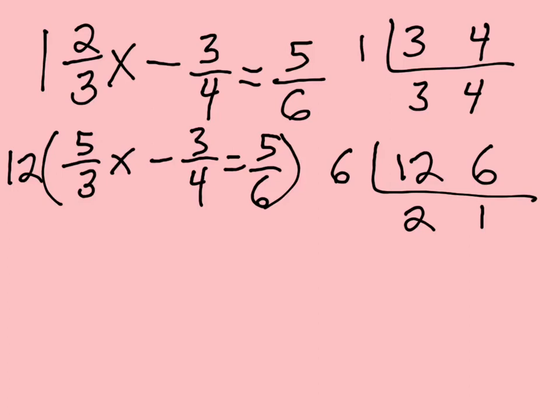And so then 12 divided by 3 is 4, 4 times 5 is 20. So this becomes 20X minus. And then 12 divided by 4, see how we're taking that 12 and dividing it by 4 is 3, 3 times the numerator is 3 times 3 is 9. And so we get minus 9 because we keep that minus. And then 12 divided by 6 is 2 times 5 is 10. A lot easier problem.